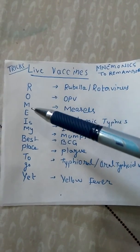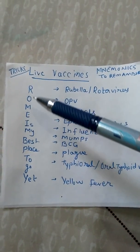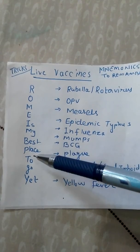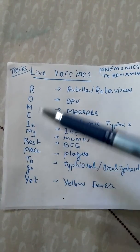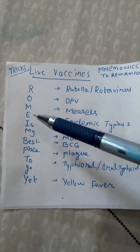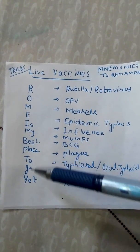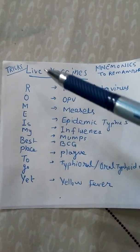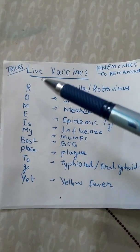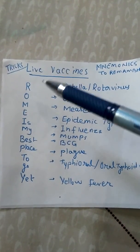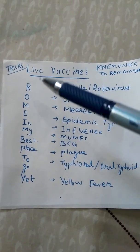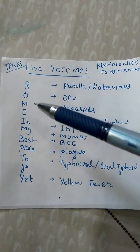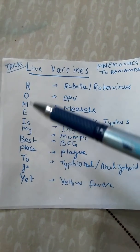The short mnemonic is: 'Rome is my best place to go yet.' You can imagine when you are alive, living life in a happening way, and you go to Rome to see good places.